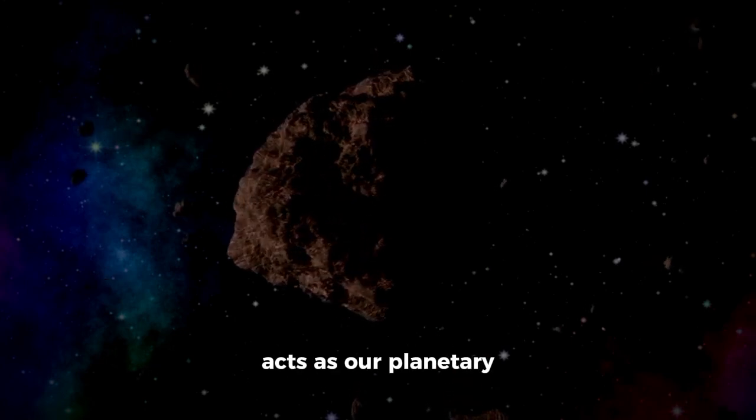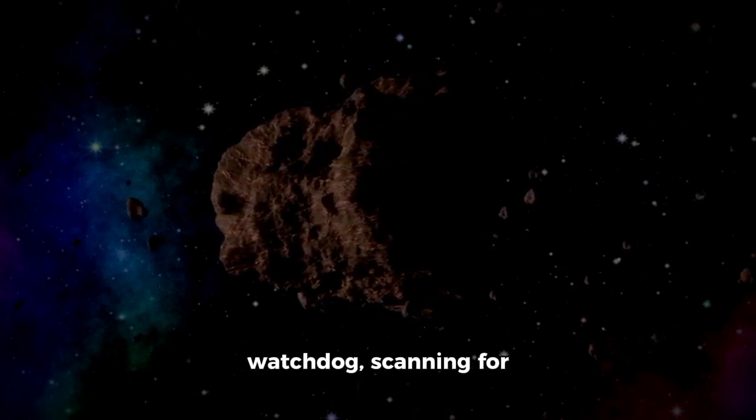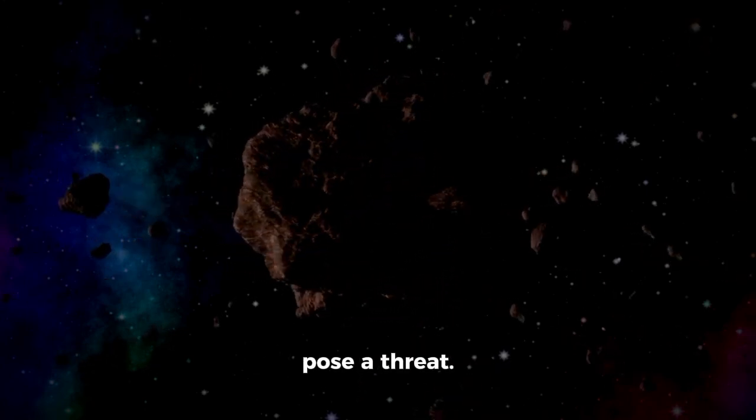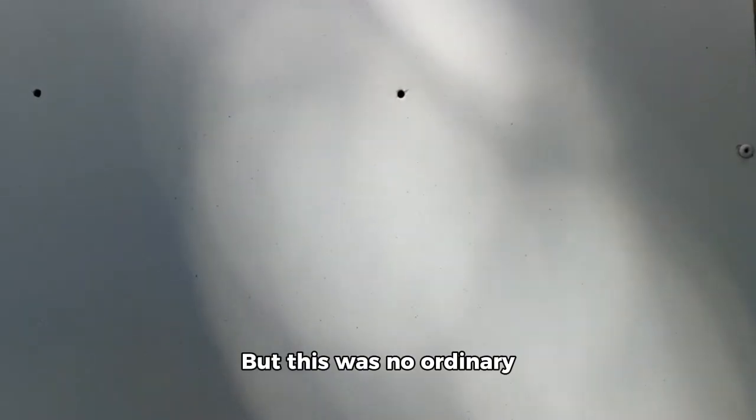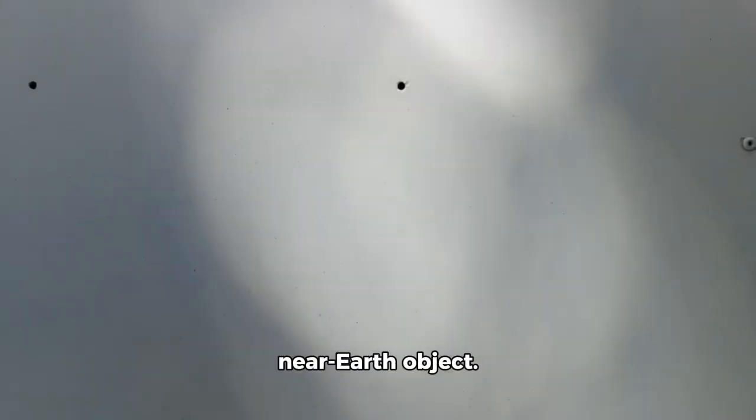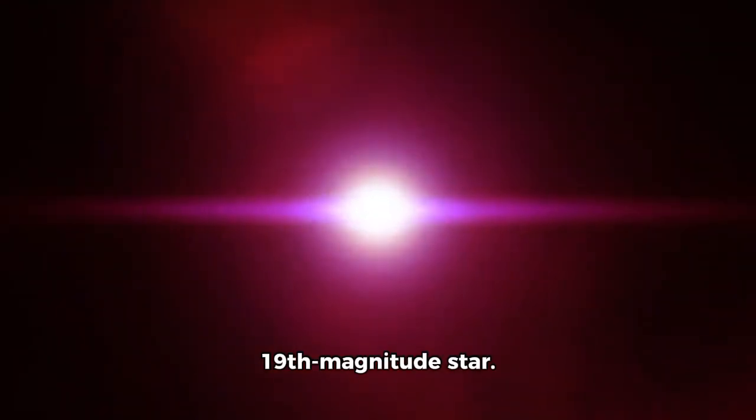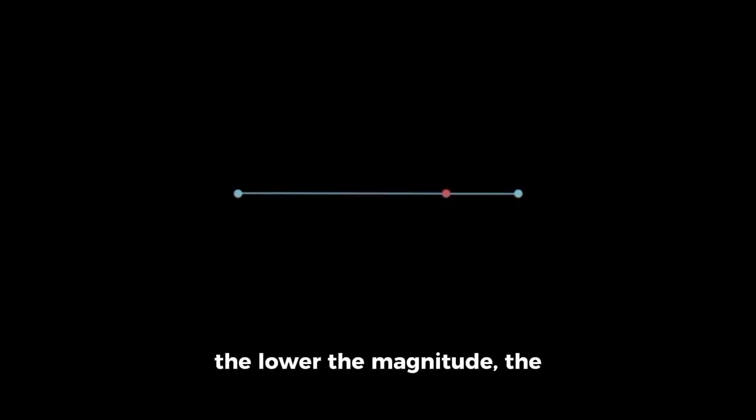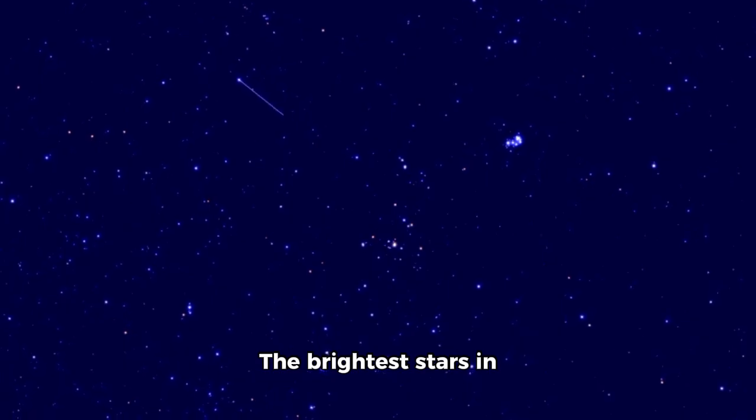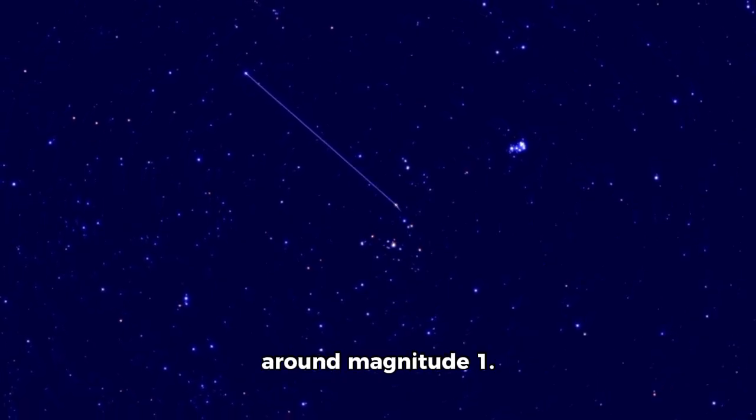Normally, this system acts as our planetary watchdog, scanning for asteroids that might pose a threat. But this was no ordinary near-Earth object. It appeared as a faint blip, no brighter than a 19th magnitude star. To put that into perspective, the lower the magnitude, the brighter the object. The brightest stars in our night sky are around magnitude 1. A 19th magnitude object is thousands of times fainter than what the naked eye can see—a ghost against the cosmic background.